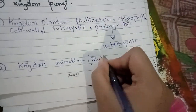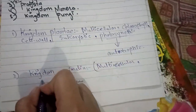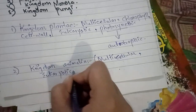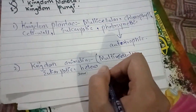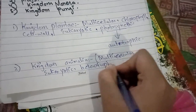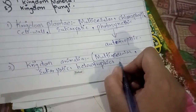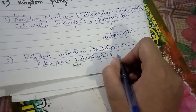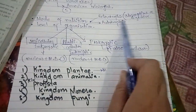Kingdom Animalia contains multicellular organisms that are eukaryotic and heterotrophic — meaning they do not make their own food but are dependent on plants or other organisms for food. They have no cell wall and no chlorophyll, so they do not perform photosynthesis. All animals including humans are placed in this kingdom.